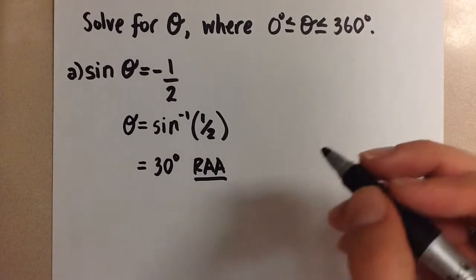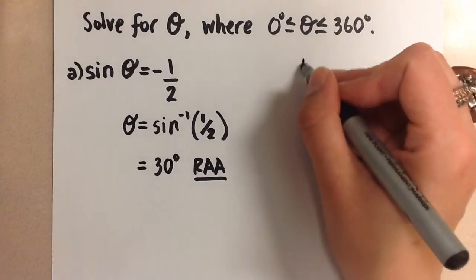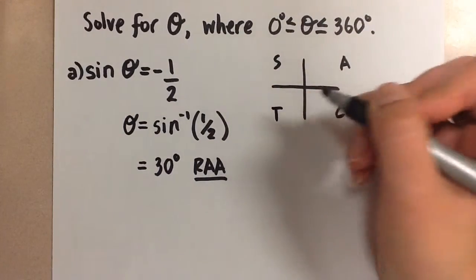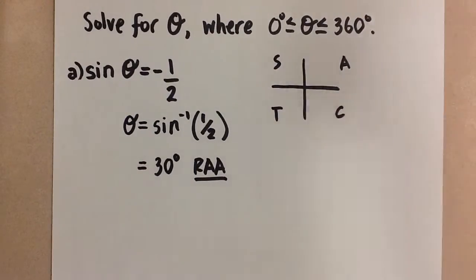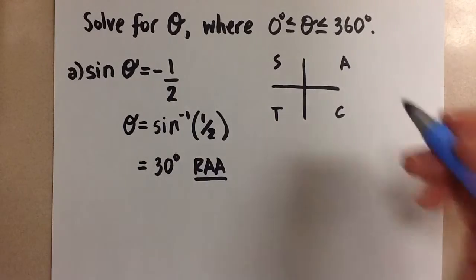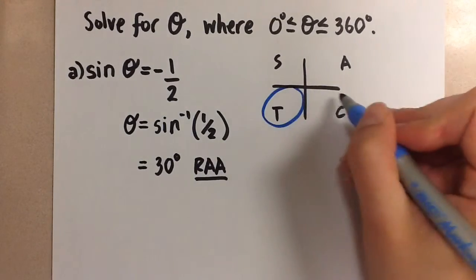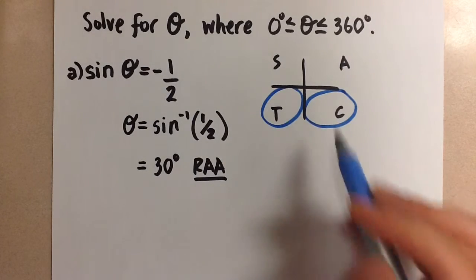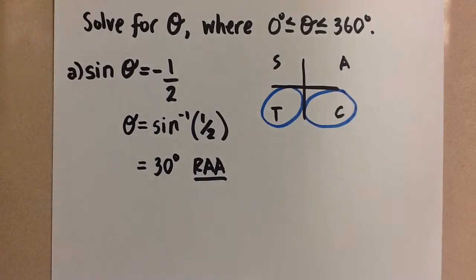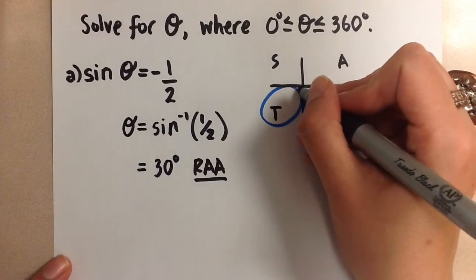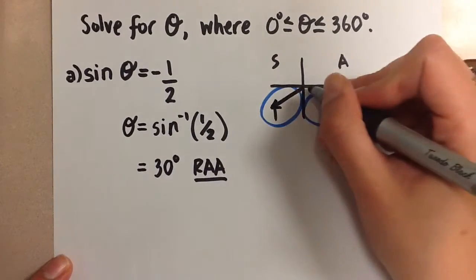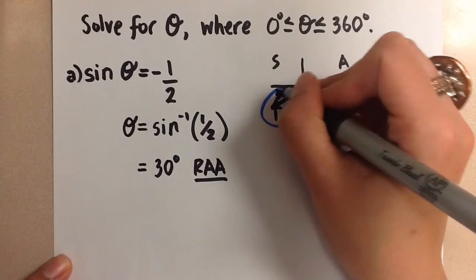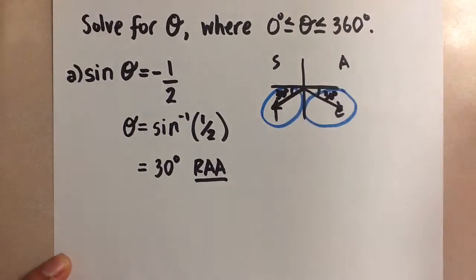So the negative tells us that, according to the CAST rule, this angle is going to be in the third and fourth quadrant because those are the two quadrants where sine is negative. So we want to draw our terminal arms in the third and in the fourth quadrant with the related angle of 30 degrees for each.